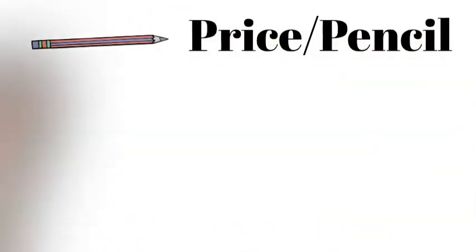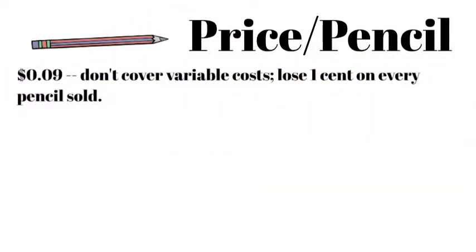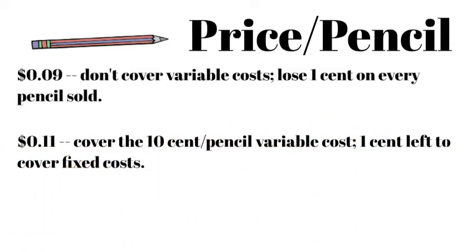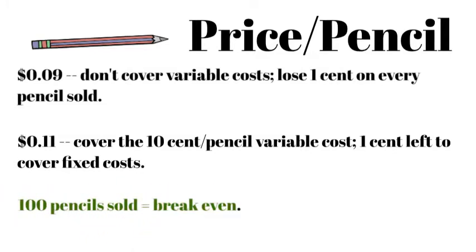Consider if a pencil sold for 9 cents — variable costs would not be covered, and a 1 cent loss would be incurred on every pencil sold. If you sold the pencil for 11 cents, 10 cents would cover variable costs and 1 cent would be left over to cover fixed costs. After 100 pencils were sold, you would break even.